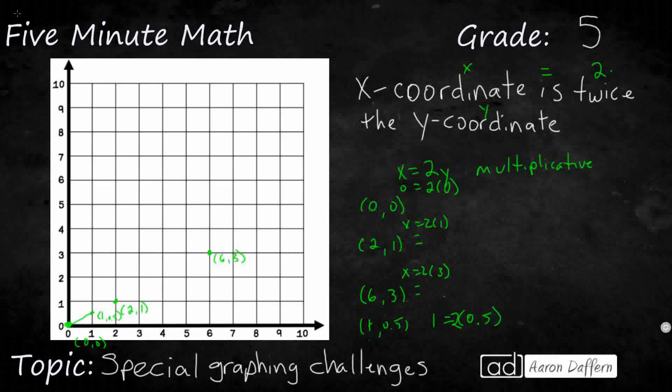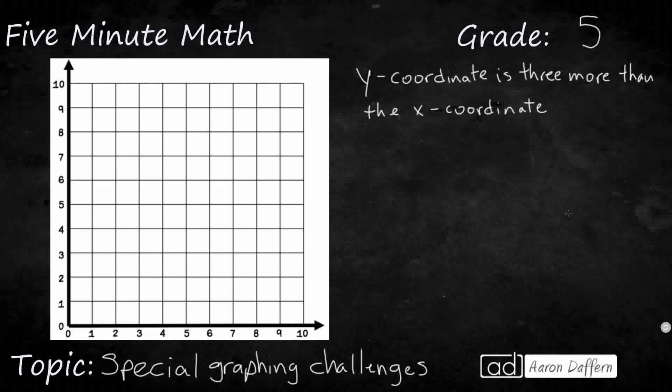You see we've got this line going through all these points right here. Here's another example. Let's say the y-coordinate needs to be three more than the x-coordinate. So y equals three more than - that's three plus x. So y equals 3 plus x. Rather than a multiplicative pattern, this is an additive pattern.